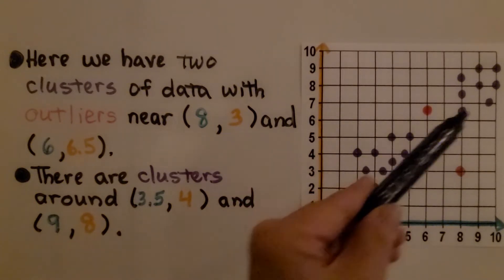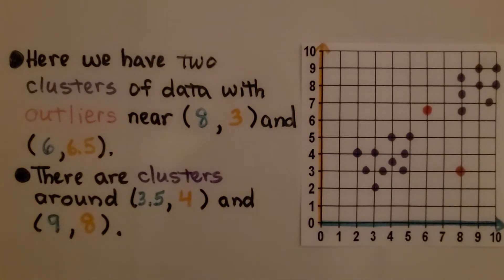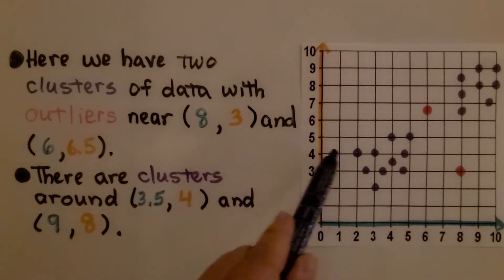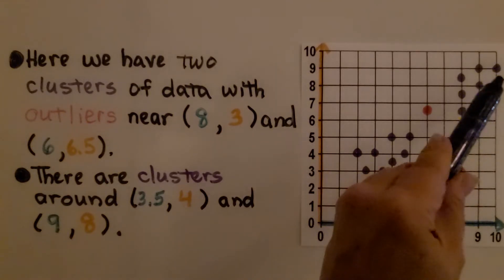We have a cluster here and a cluster there. There are clusters around, for x, it's around 3½ and 4 and 9, 8.